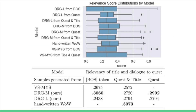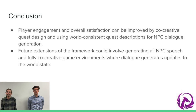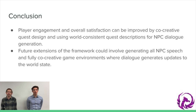Notably, despite the relatively small size of our primary model, DRGM, its relevance scores mirror those of handwritten quests more than any other model. Our empirical results suggest that player engagement and overall satisfaction can be improved by (A) allowing the player to participate in the co-creative process of quest design, and (B) using world-consistent quest descriptions as the impetus for neural NPC dialogue generation.